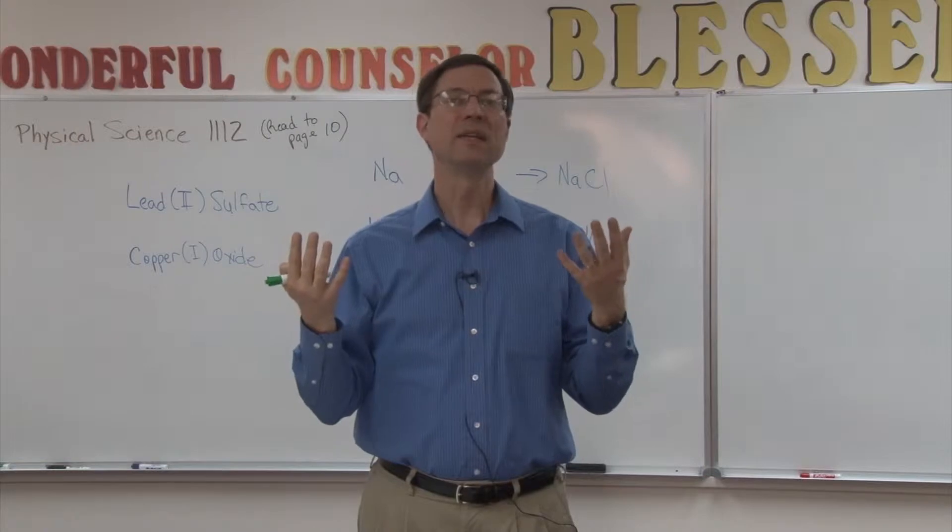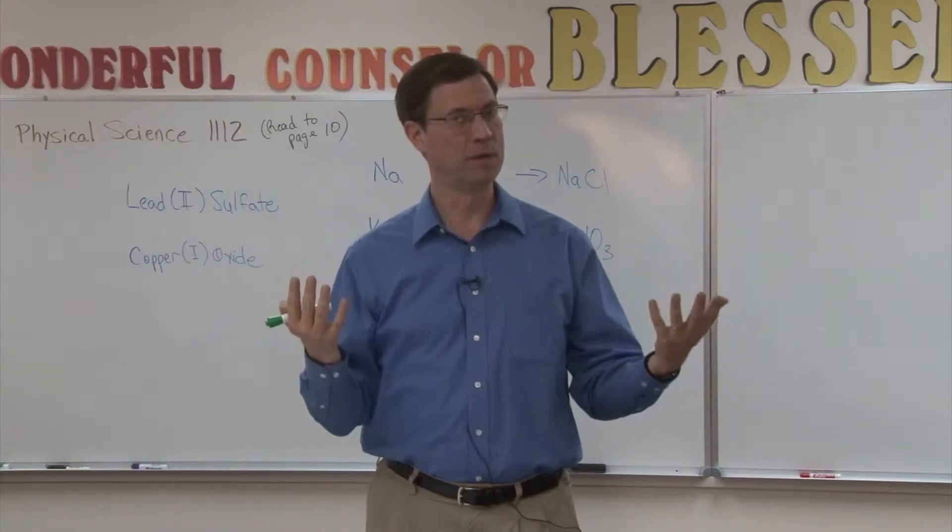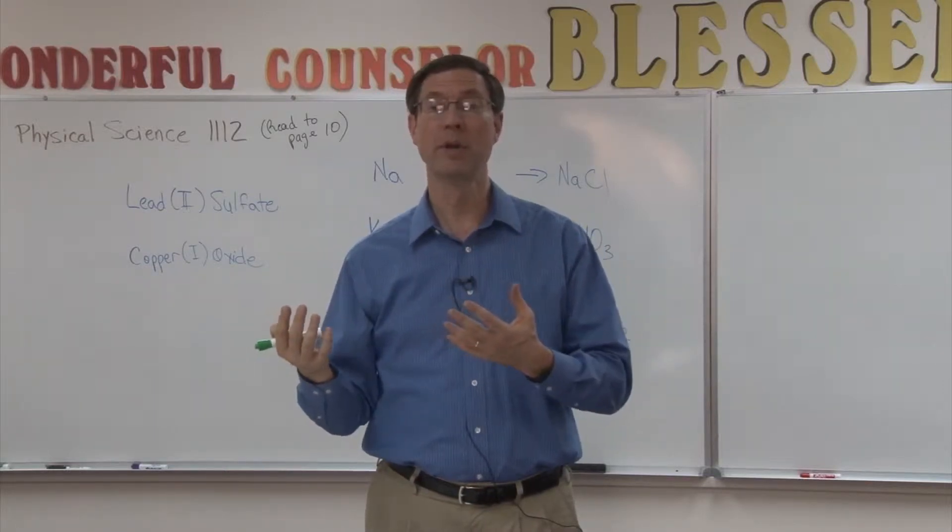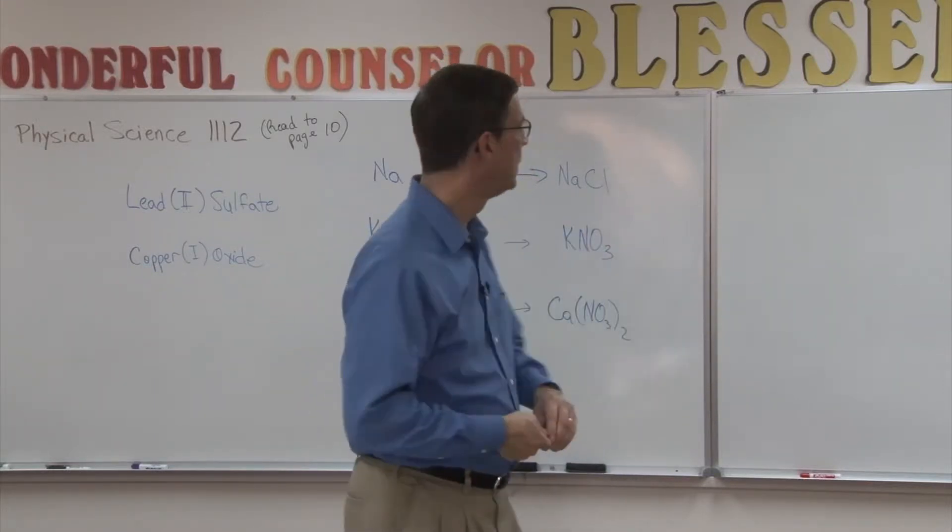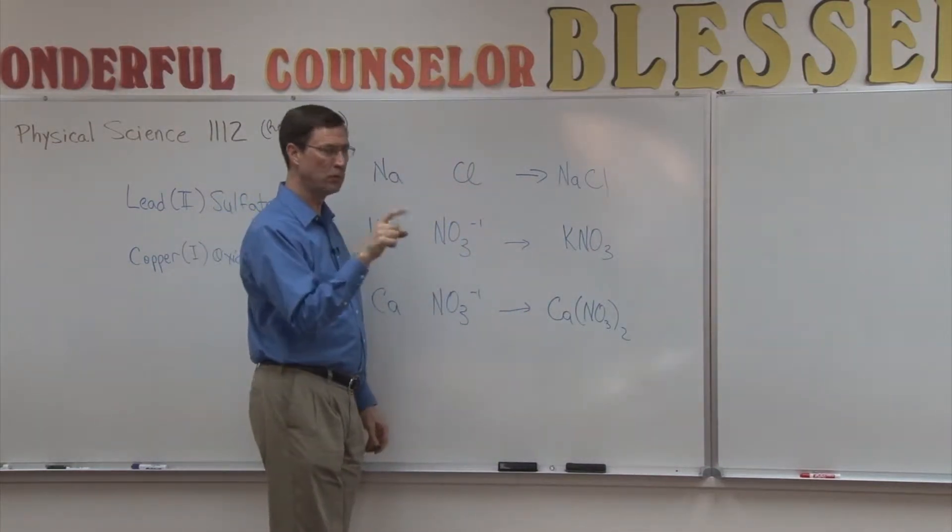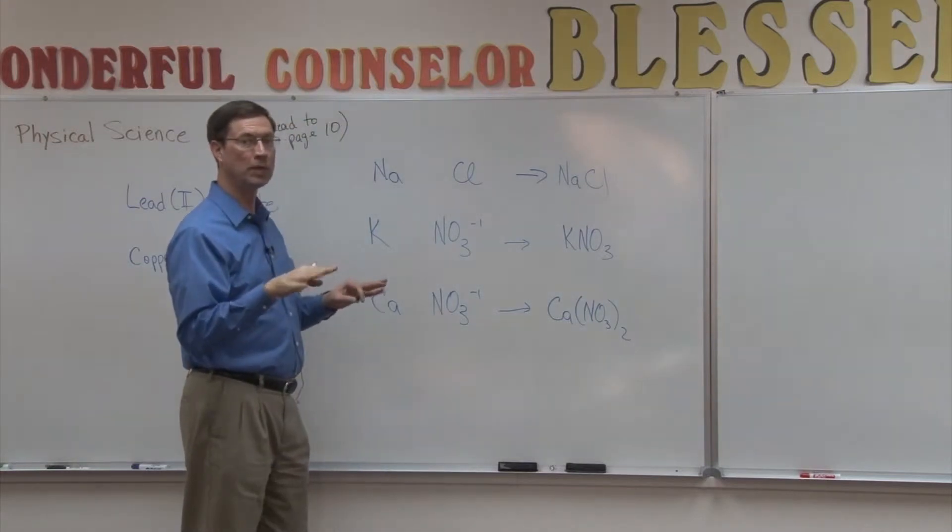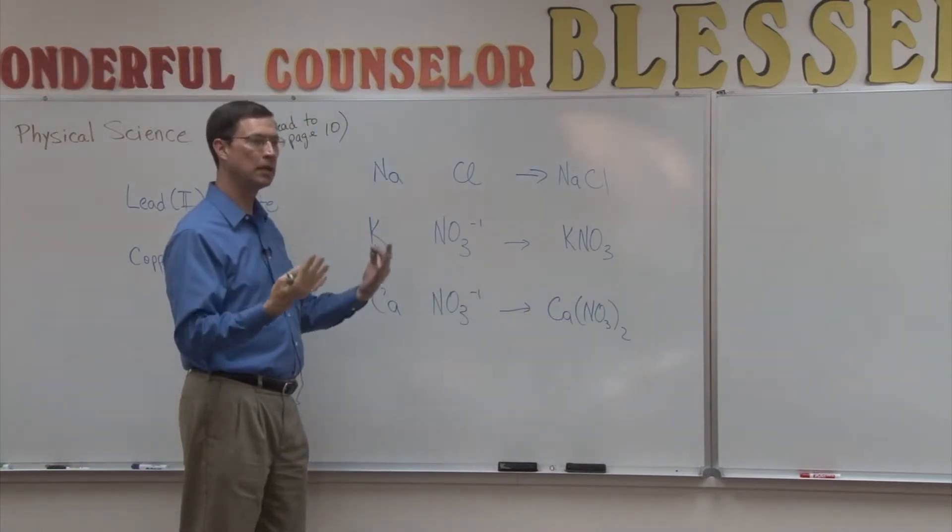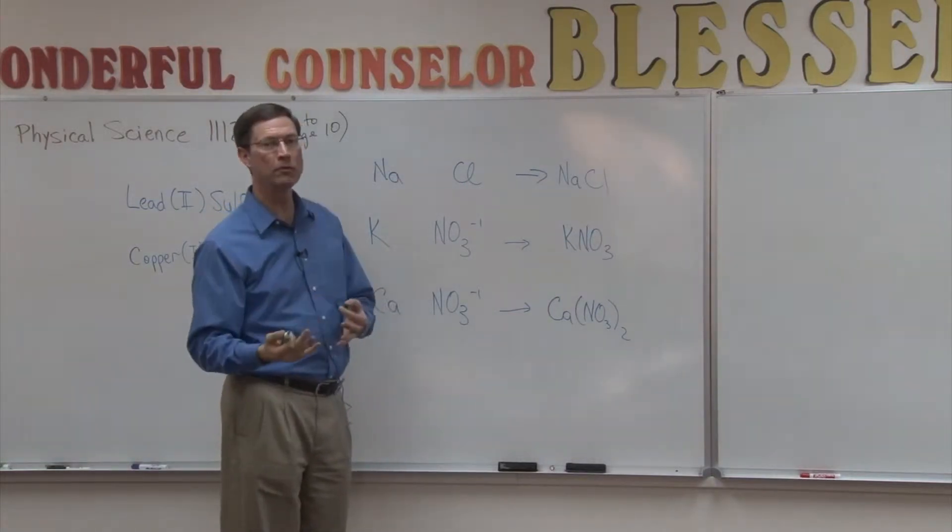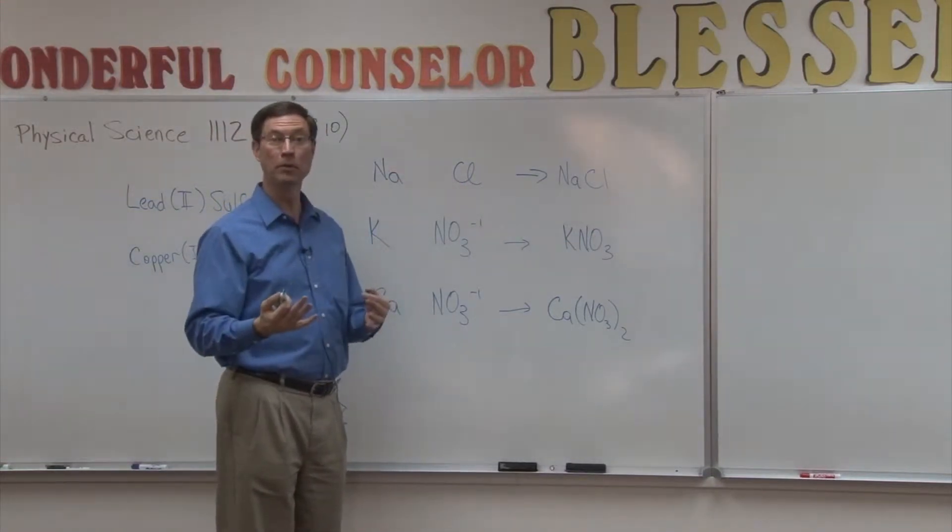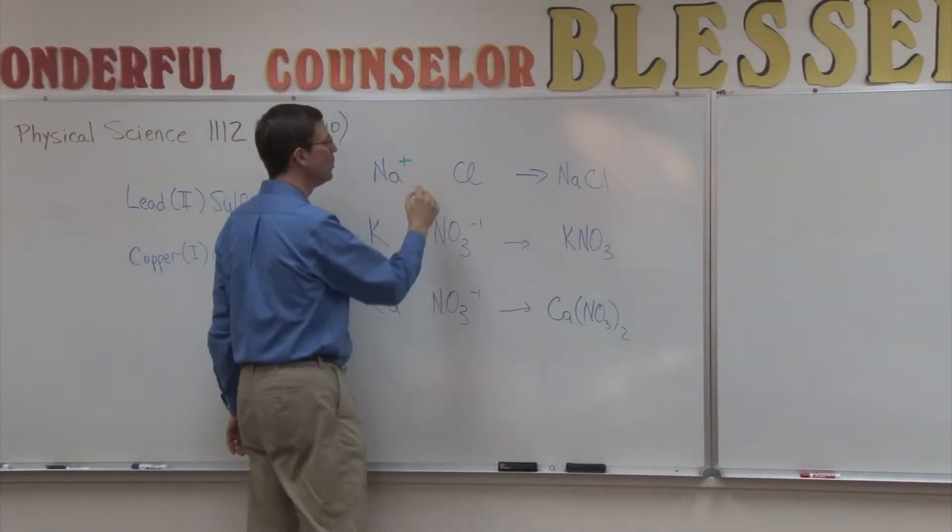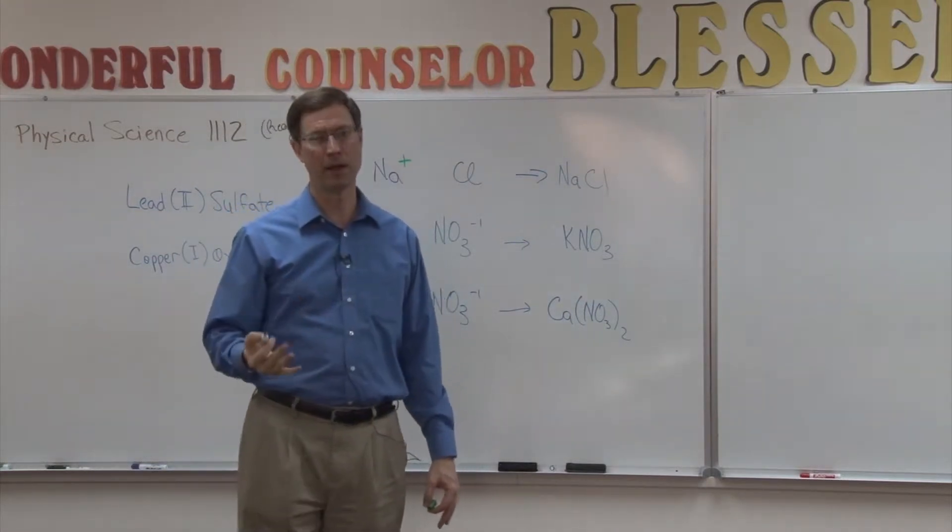If it gives up that one electron, now it has 11 protons, but only 10 electrons. So when sodium gives up one electron, it's no longer neutral. Now it's still a sodium. So it still has 11 positives. So the positive charges outweigh the negative charges by one. There's one more positive charge than negative charges. So we would say sodium becomes a positive ion.